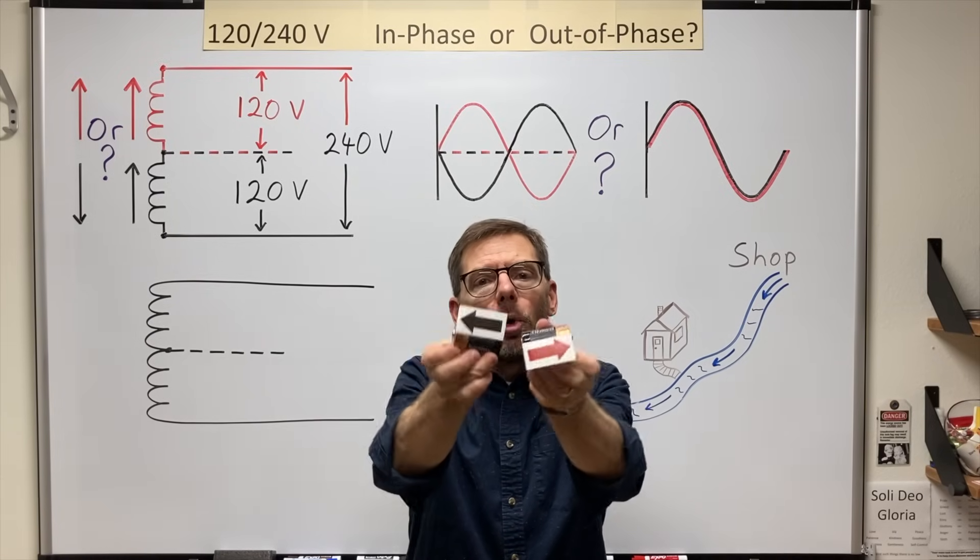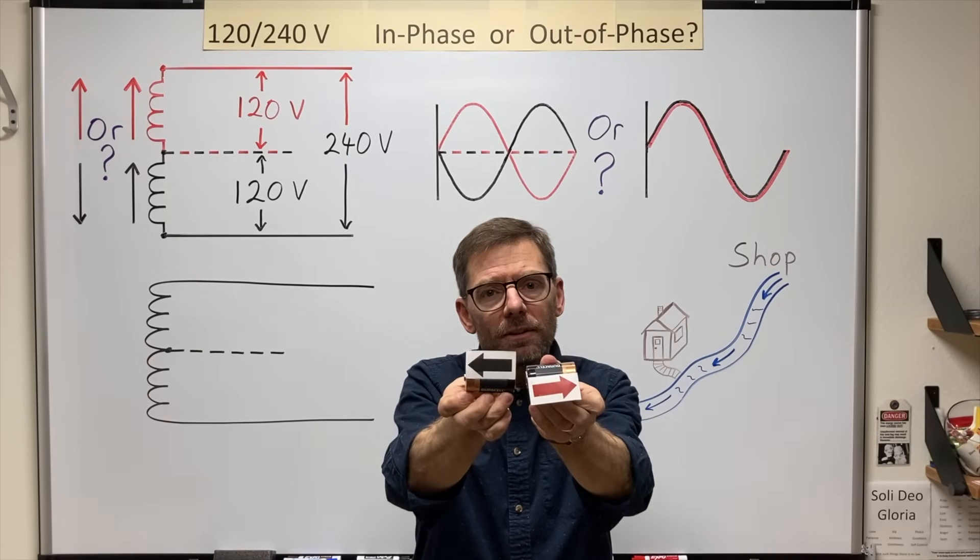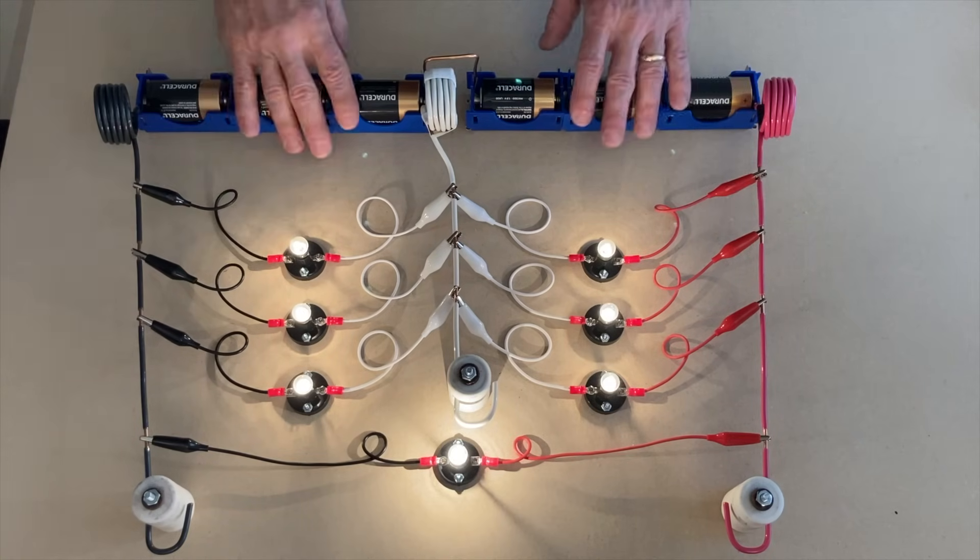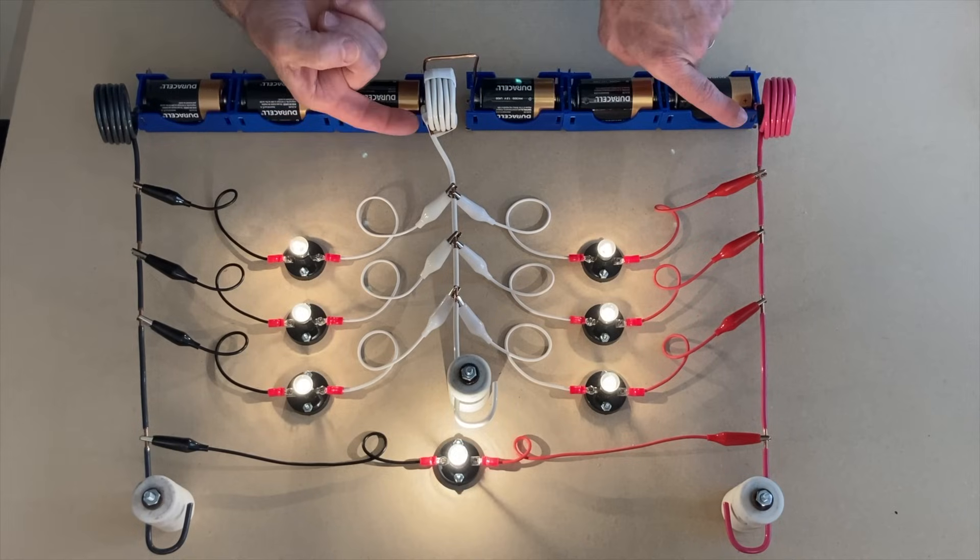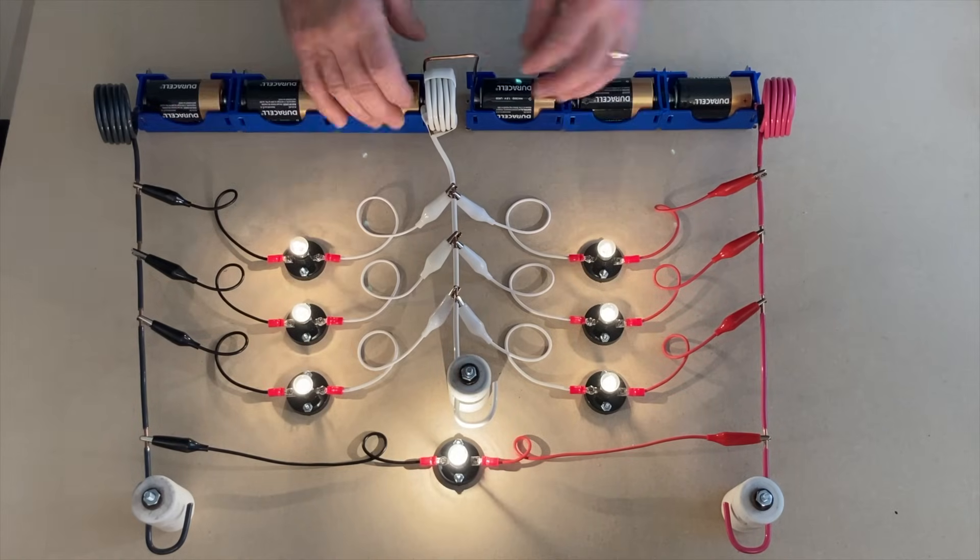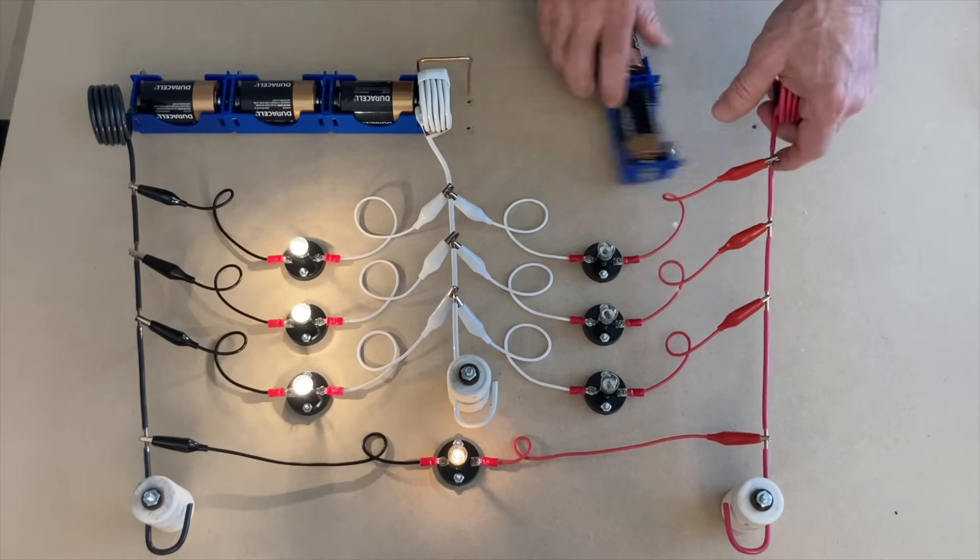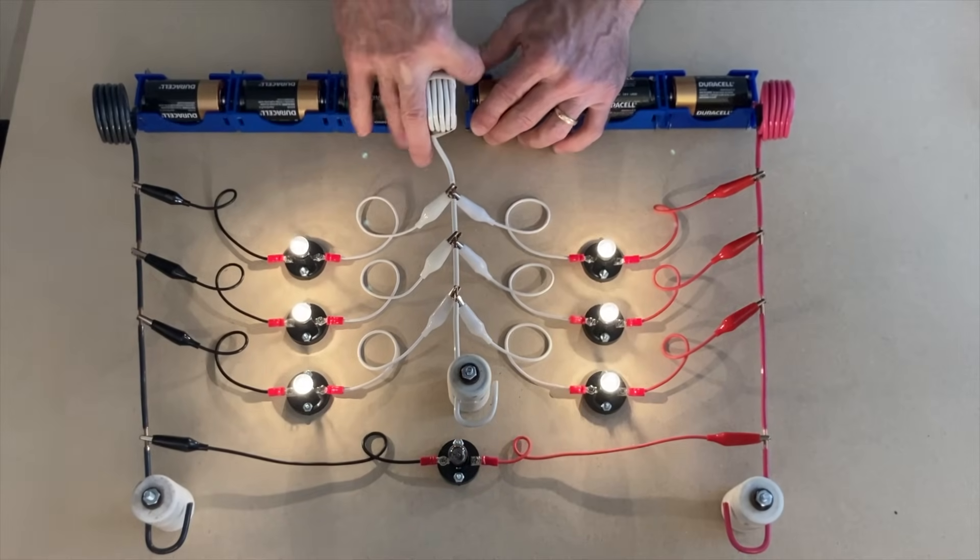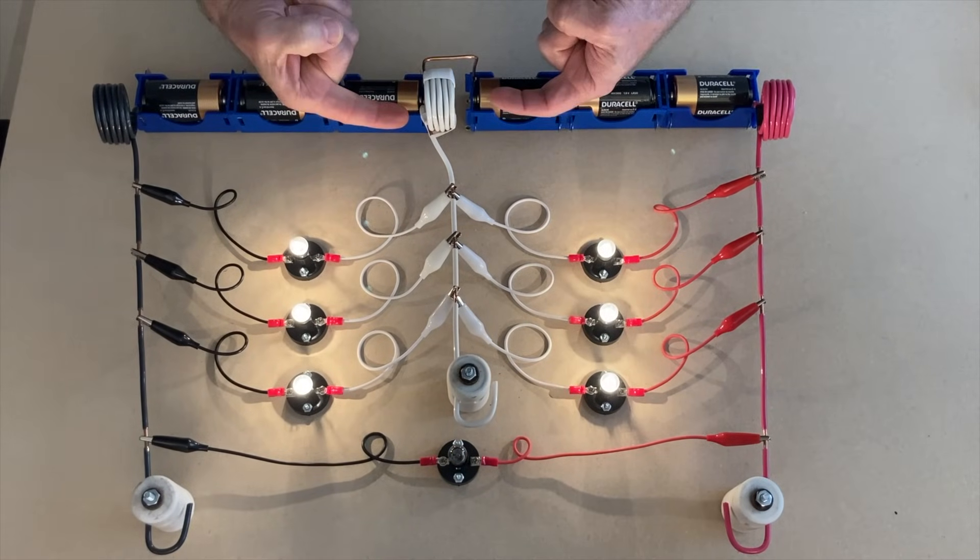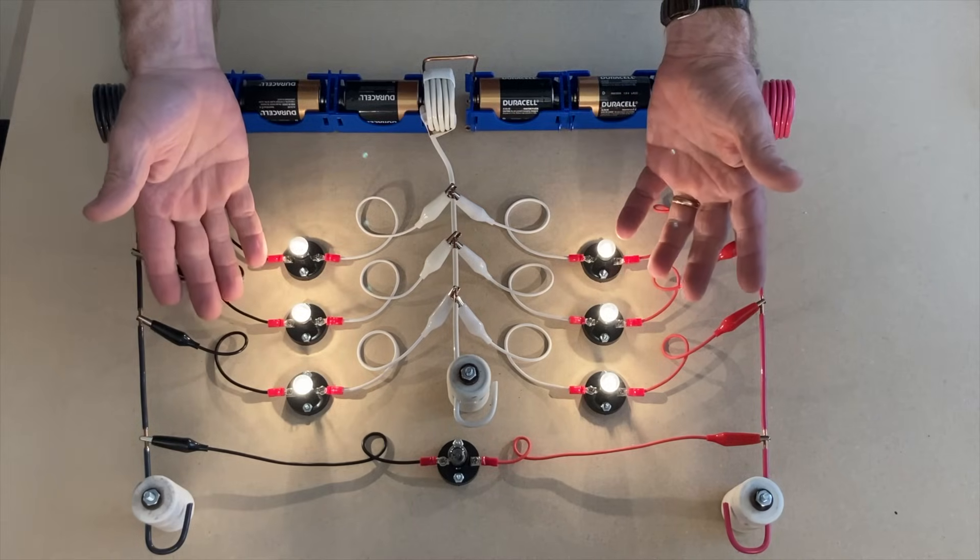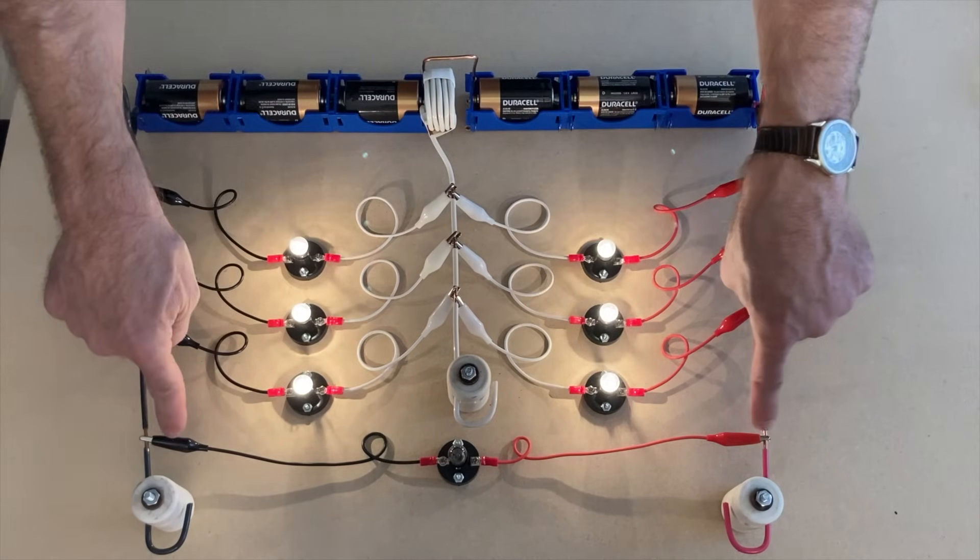With my three wire single phase mock up here, you can see that I have two sources or two halves that are in phase with each other because the copper tops are all pointing the same way and the loads seem to be working fine. Now we'll turn this half around so that the two sources or two halves of the source are out of phase from each other by 180 degrees. What we find is our line to neutral loads seem to be working fine, but I lost my line to line.